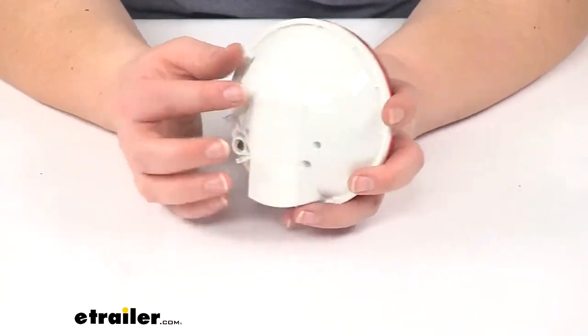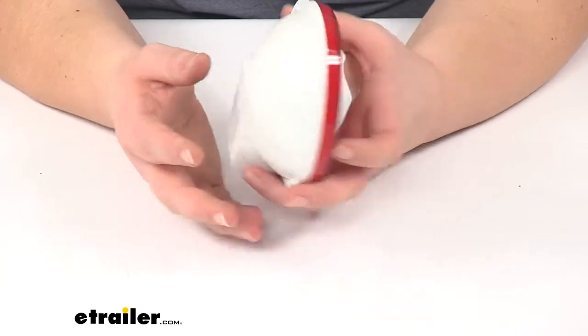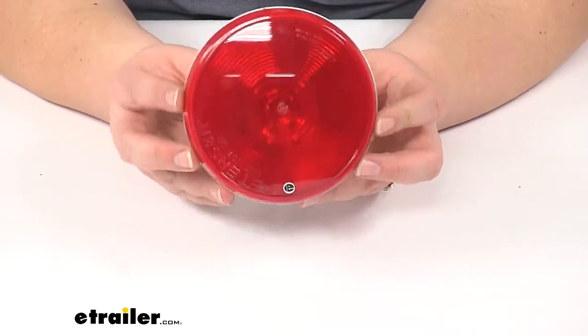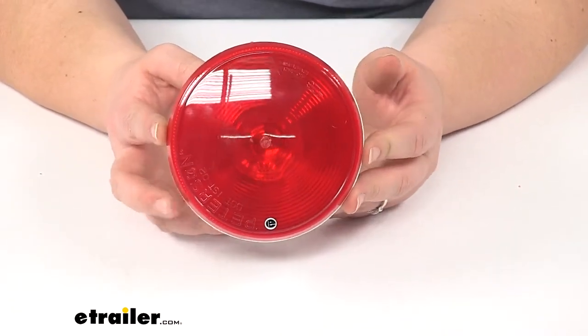It does have a recessed mount with a grommet that is sold separately. You can find that here at eTrailer.com using part number 426-18.